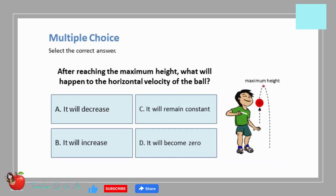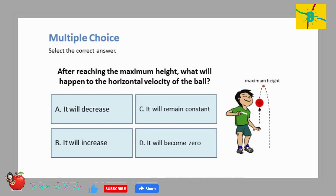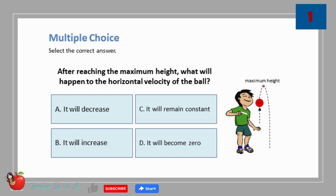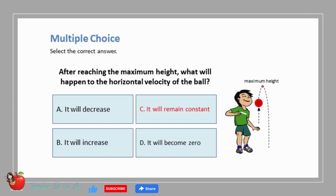Multiple choice — select the correct answer. After reaching the maximum height, what will happen to the horizontal velocity of the ball? A. It will decrease. B. It will increase. C. It will remain constant. D. It will become zero at maximum height. The correct answer is C: it will remain constant.